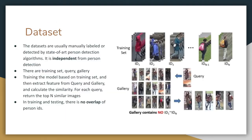There are several common features of datasets for person re-ID. The bounding boxes are usually manually labeled or detected by state-of-the-art person detection algorithms, independent from person detection. Usually the dataset has a training set, gallery set, and query set. The model is trained on the training set, then features are extracted from query and gallery to calculate similarity. For each query, return the top-K similar images. In training and testing, there is no overlap of person IDs.